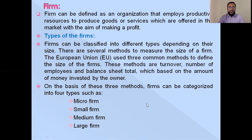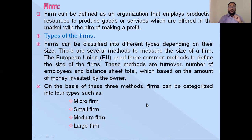Now, types of the firm. Firms can be classified into different types depending on their size. There are several methods to measure the size of a firm. The European Union uses three common methods to define the size of firms: these methods are turnover, number of employees, and balance sheet total, which is based on the amount of money invested by the owner.